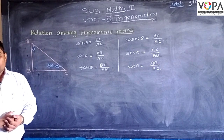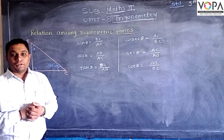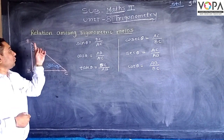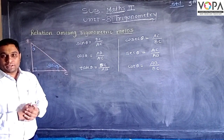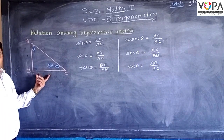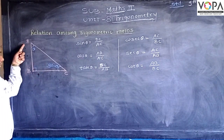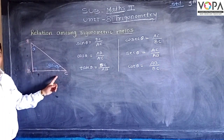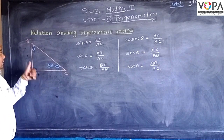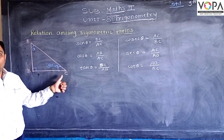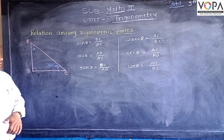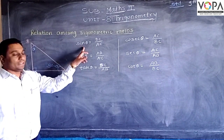Hello friends, now we are going to see the next level of this topic that is related to the trigonometric ratios. Our figure is A, B, C — angle B is the right angle, angle A is theta, and the complementary angle C is 90 minus theta.